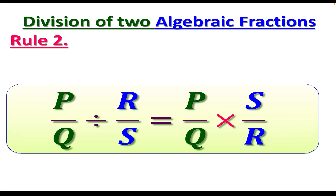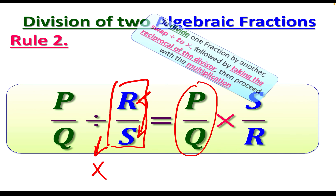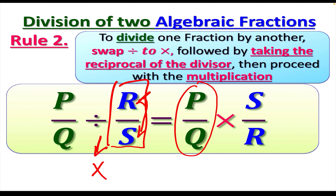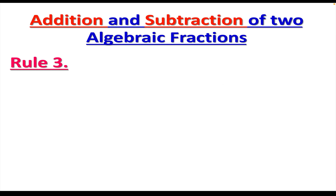The second operation is division. For P over Q divided by R over S, keep the first fraction as is, swap division to multiplication, and flip the second fraction — so it becomes S over R. This is precisely the same as dividing two numerical fractions, provided that Q and S are not equal to zero.